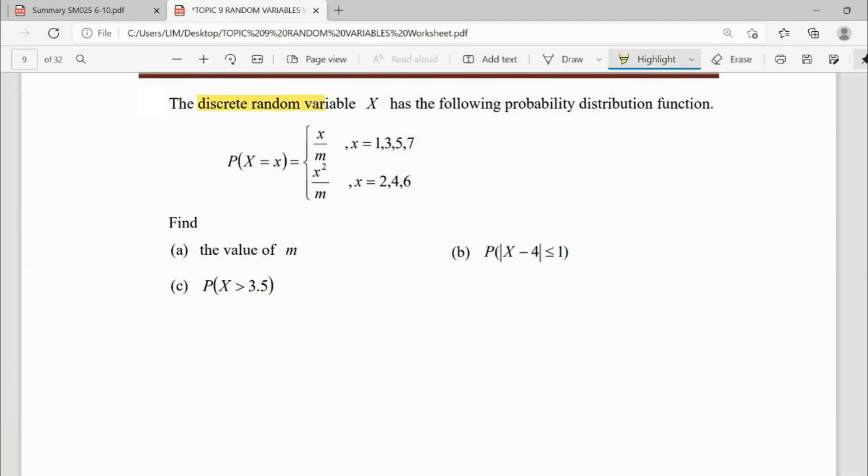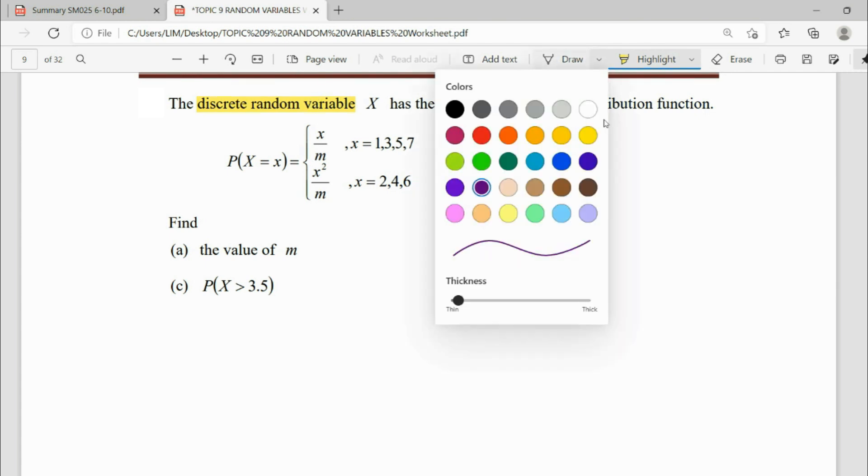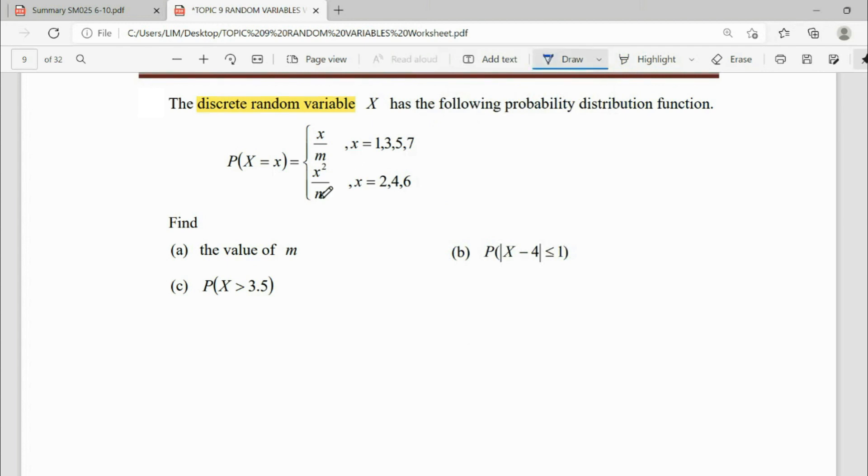This question tells us this is a discrete random variable. In discrete, we will need our table. For the first part, we have to find out what is our m value, that only we can solve the probability question for the rest. From here, we build up our table. So for x, random variable, we will have 1, 2, 3, 4, 5, 6, and 7. This is our random variable and our probability.